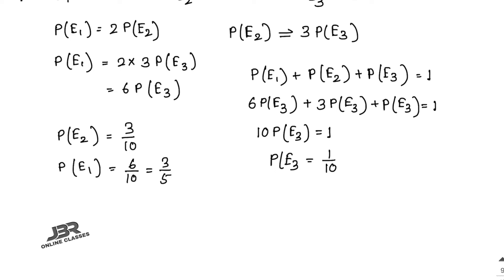If the post is filled, the probabilities of A, B, and C being selected are: required probability for candidate A = 3/5, required probability for candidate B = 3/10, and required probability for candidate C = 1/10. So your answers are 3/5, 3/10, and 1/10.